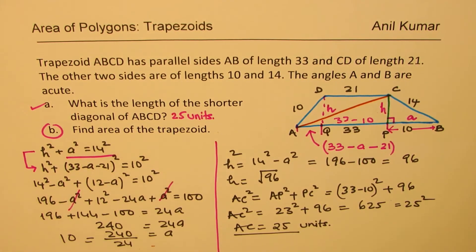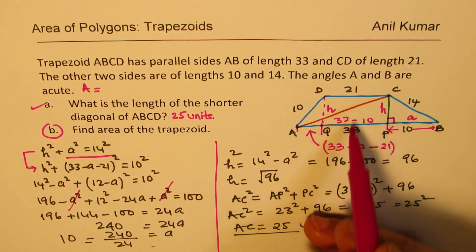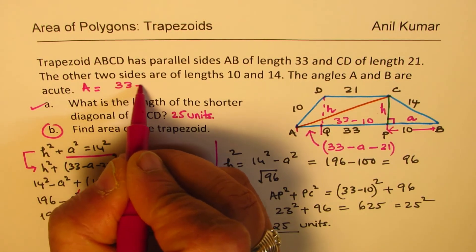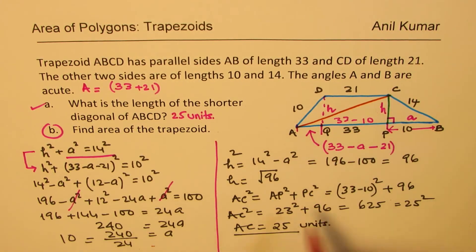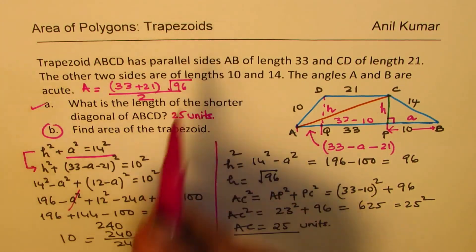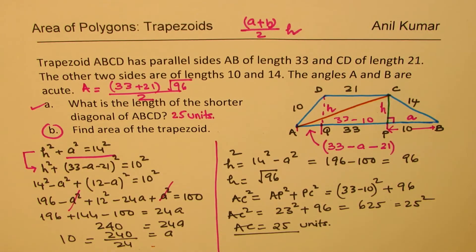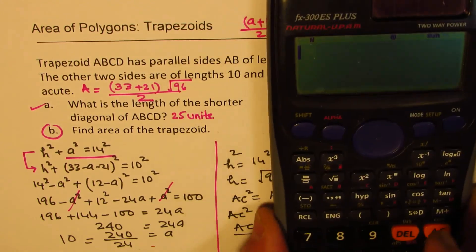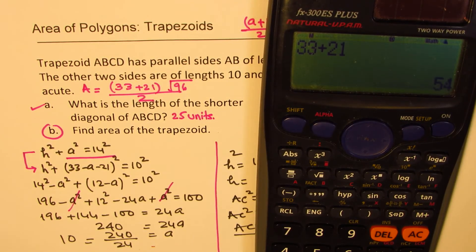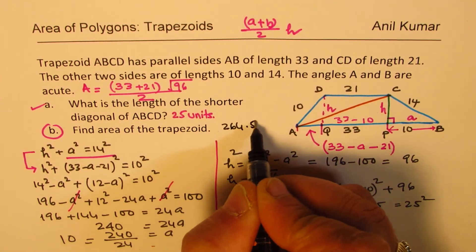The second part is to find the area of the trapezoid. The formula is: area = (a + b) / 2 × height = (33 + 21) / 2 × √96. Using a calculator: 33 + 21 = 54, times √96, divided by 2, gives approximately 264.5 square units.